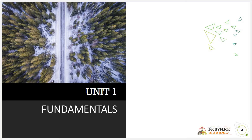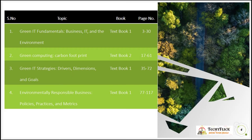Unit one is named Fundamentals and has four topics. The first topic, Green IT Fundamentals: Business, IT and the Environment, is from textbook one, pages 3 to 30. The second topic, Green Computing Carbon Footprint, is from textbook two, pages 17 to 61. The third topic, Green IT Strategies: Drivers, Dimensions and Goals, is from textbook one, pages 35 to 72. The fourth topic, Environmentally Responsible Business (ERB) and their policies, practices and metrics, is from textbook one, pages 77 to 117.